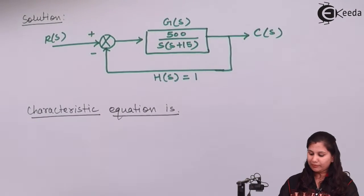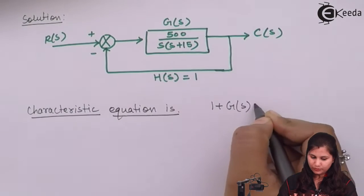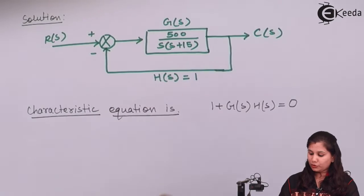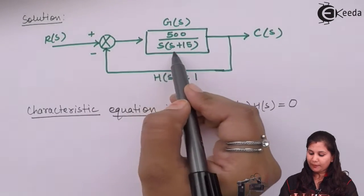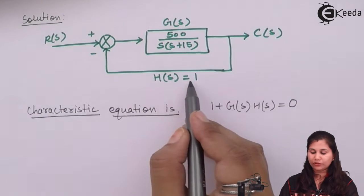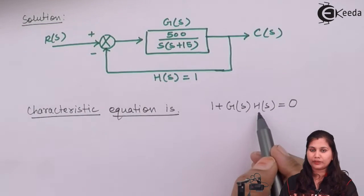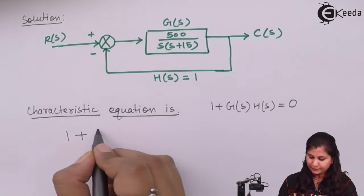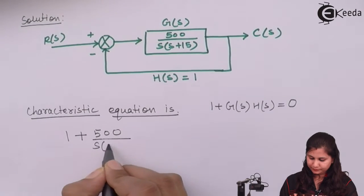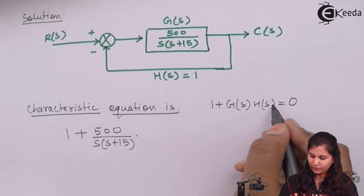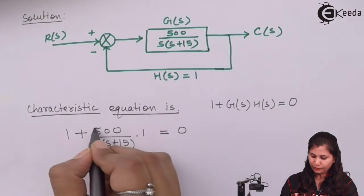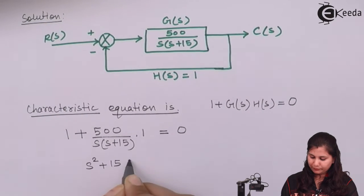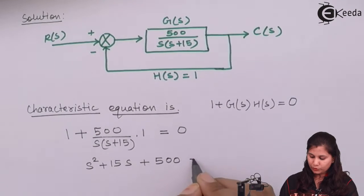The characteristic equation is given by 1 plus G(S)·H(S) equals 0. G(S) is given as 500 upon S(S+15) and H(S) is 1. Putting these values in the equation and solving, we get the characteristic equation as S² + 15S + 500 = 0.